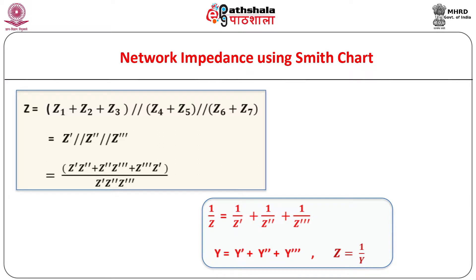As an example, suppose we want to find the net impedance Z of a network given by Z = (Z1 + Z2 + Z3) in parallel with (Z4 + Z5), and that too in parallel with (Z6 + Z7). It is easy to calculate and plot the effective impedances Z', Z'', and Z''' of the series combinations on the Smith chart. However, computing the effective impedance of the parallel combination of Z', Z'', and Z''' directly is rather cumbersome. In such a case, using admittances allows us to compute Z using simple addition on the Smith chart.